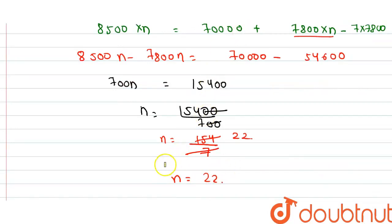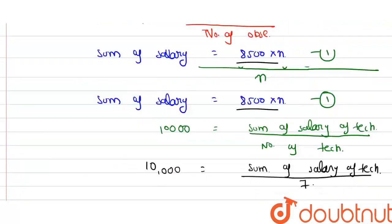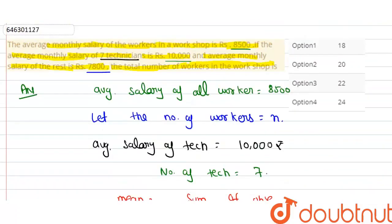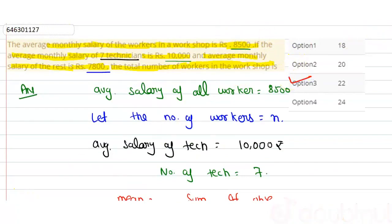इसका मतलब total number of workers कितने हो गए? 22. तो total number of workers = 22. और question में यही पूछा था — total कितने workers हैं। तो total workers = 22, and option 3 is the correct answer. Thank you.